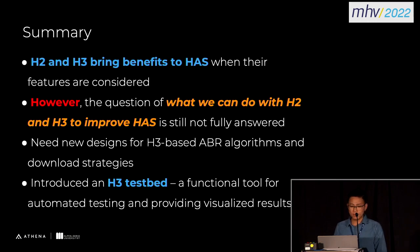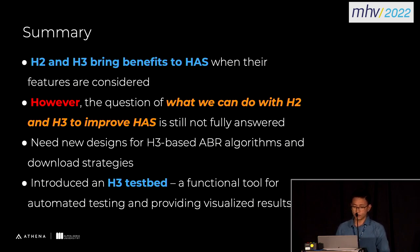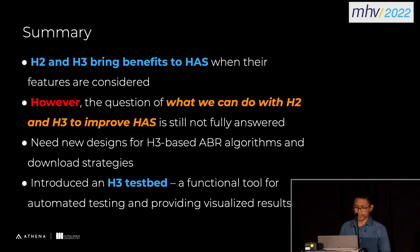In summary, HTTP/2 and HTTP/3 bring benefits to HAS when their features are considered. However, the question of what we can do with HTTP/3 and HTTP/2 to improve performance is still not fully answered. Some new designs for HTTP/3-based algorithms and download strategies can be necessary to answer those questions. In this talk, we also introduced a testbed as a functional tool for automated testing and providing visualized results. That's all for my talk.